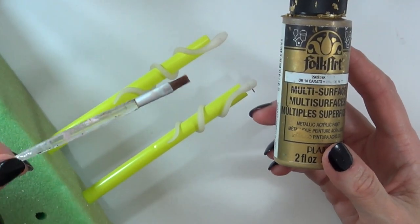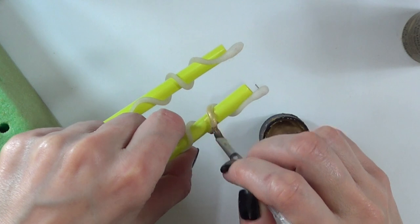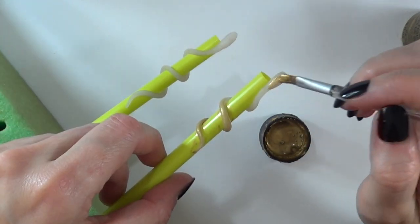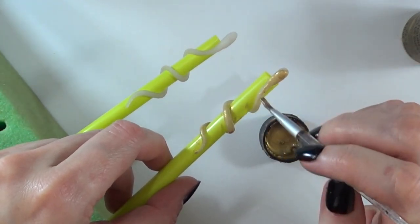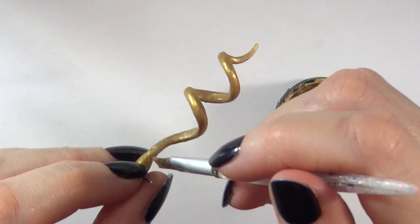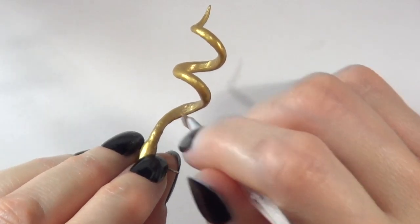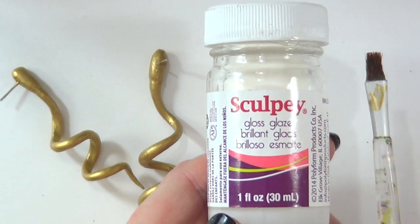Now to paint them, I'm going to be using gold acrylic paint and this brush. I'm just going to be covering first the outside of the snake and giving this a few coats. Once it's dry, I'm going to paint the rest of it, which is the inside.